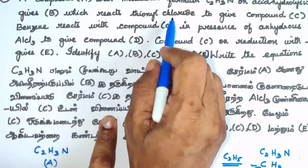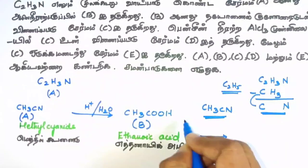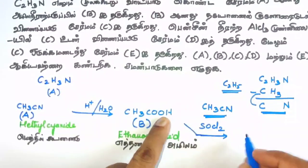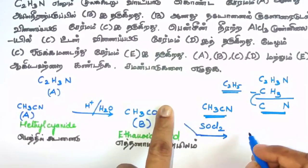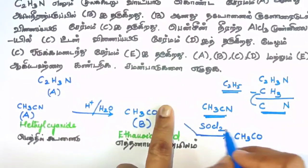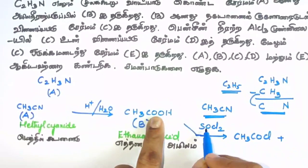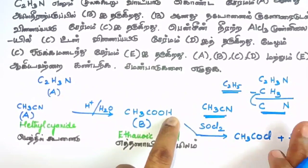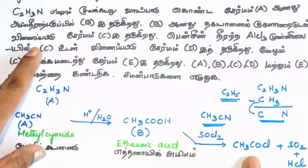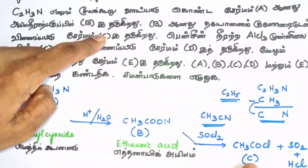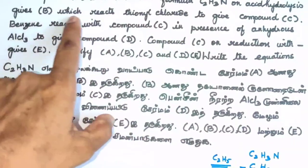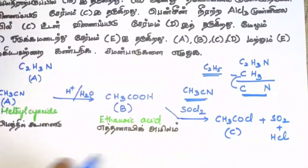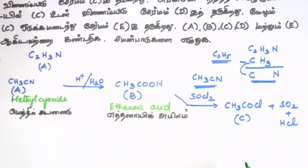Next, B is treated with thionyl chloride (SOCl2). The –OH of the carboxylic acid is replaced by –Cl: CH3COOH + SOCl2 → CH3COCl. The byproducts are SO2 and HCl. So compound C is acetyl chloride (CH3COCl).